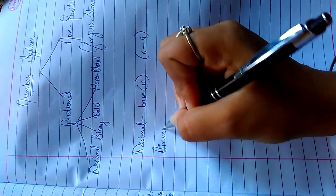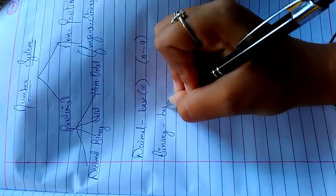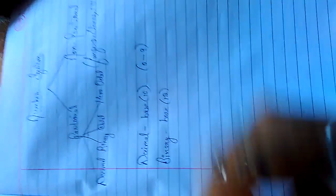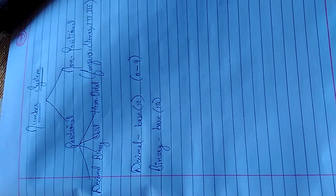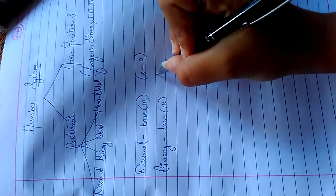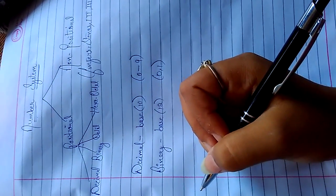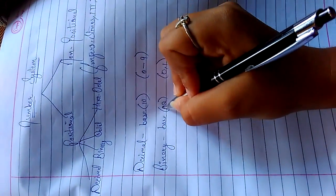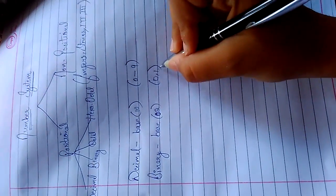Binary system has base 2 and has only 0 and 1.